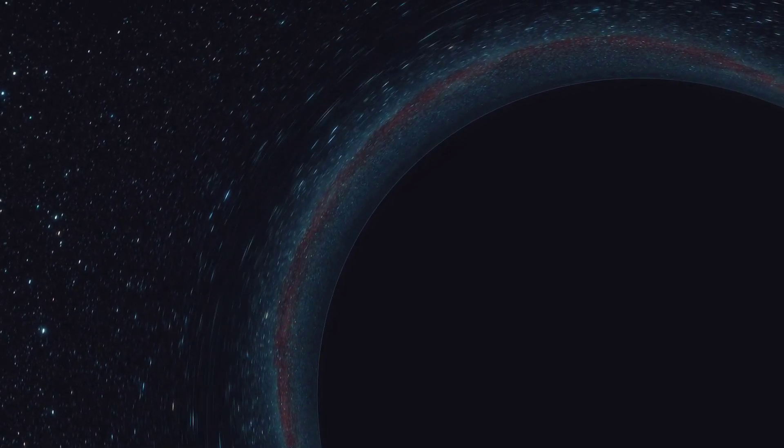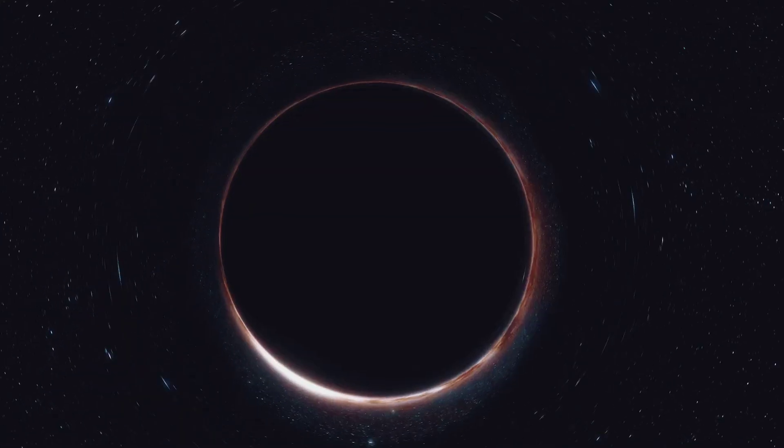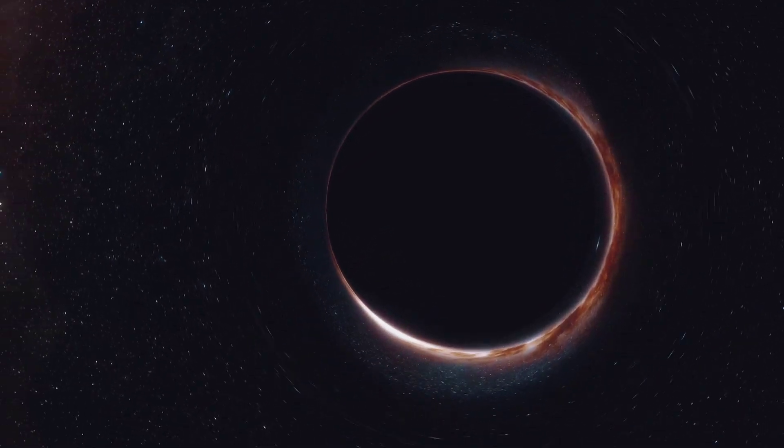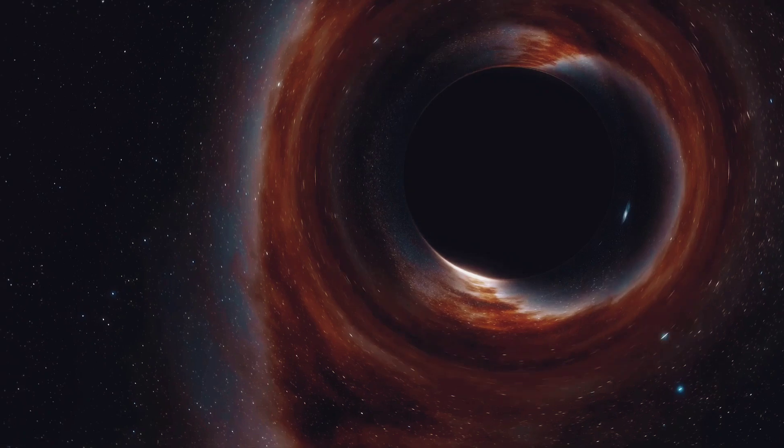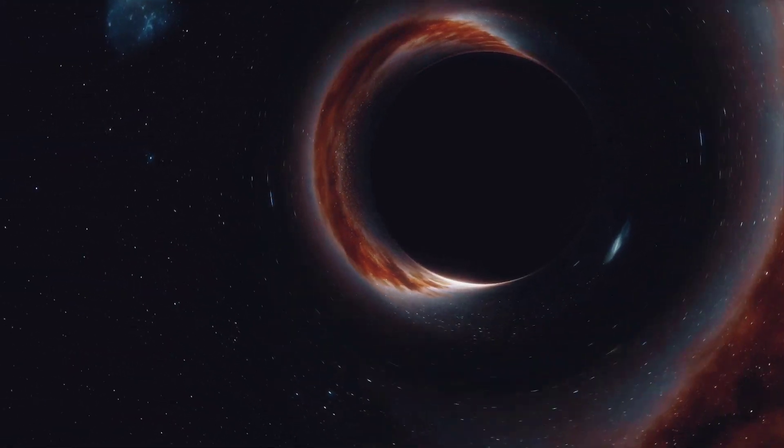But there's more. These cosmic phenomena are not just space distorters, they're time manipulators. Near a black hole, time slows down. This is not science fiction but a reality predicted by Albert Einstein's theory of relativity and confirmed by countless observations. It's a mind-boggling concept, a place where time crawls and space bends. And yet, for all their mystery and intrigue, black holes are not anomalies or aberrations.